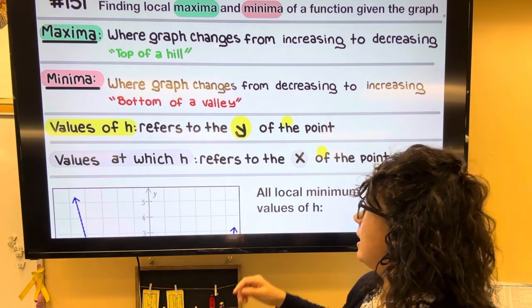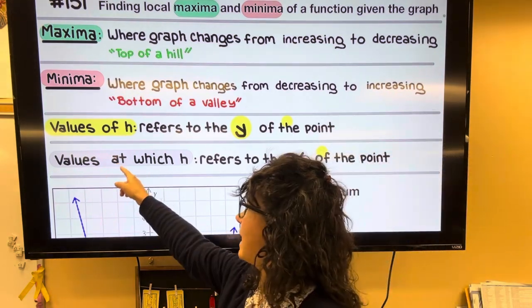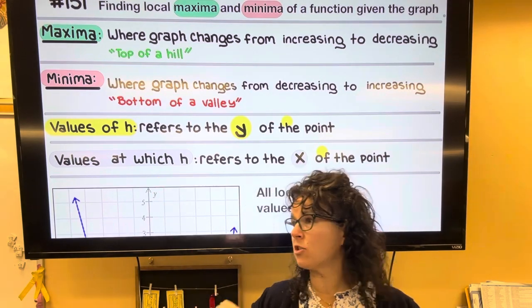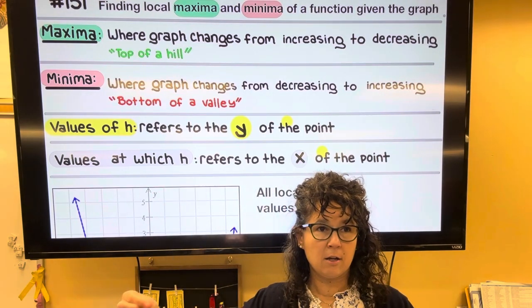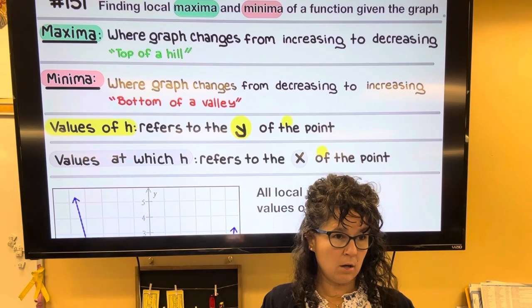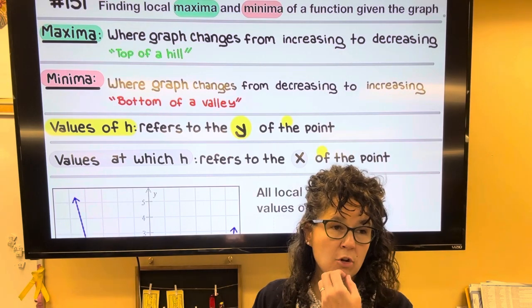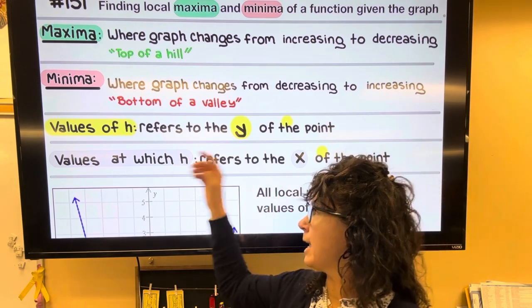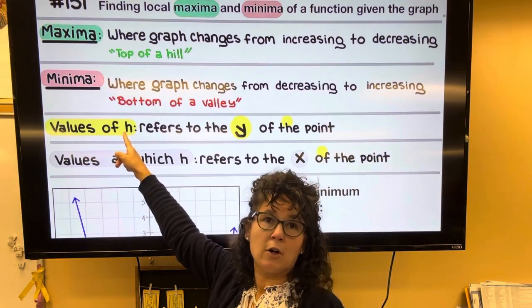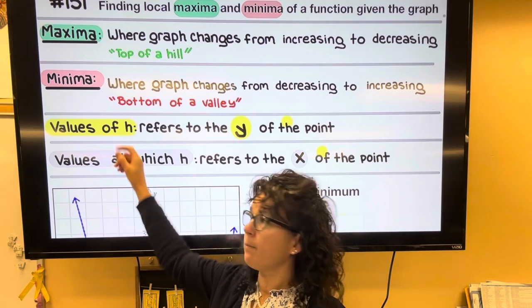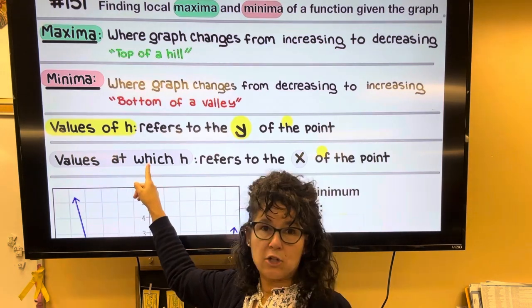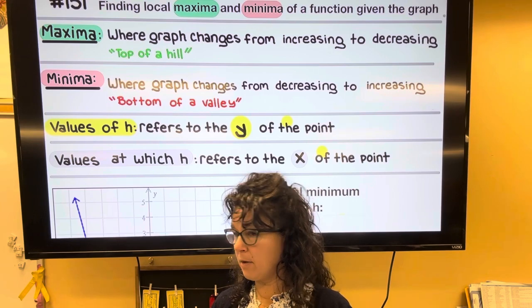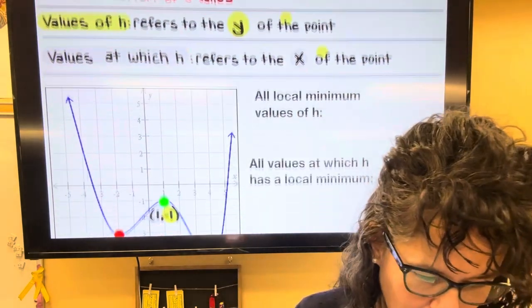And then if I see values at which H, that means what X's are causing the minimum or the maximum. So in your notes, if you're having trouble with just the wording, you might want to write down values of a function is referring to the Y coordinate and values at which H is referring to the X coordinate because pointing them out is really not that hard.